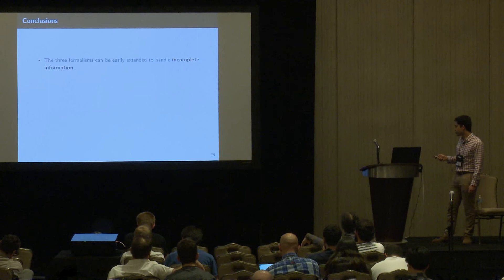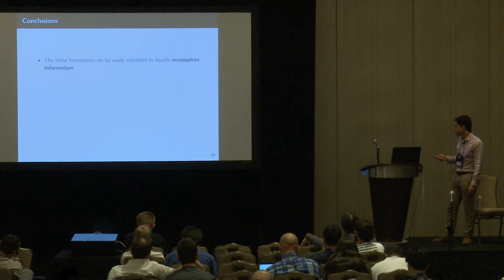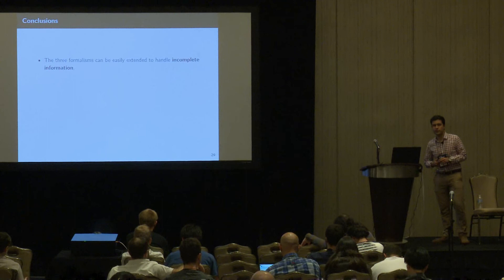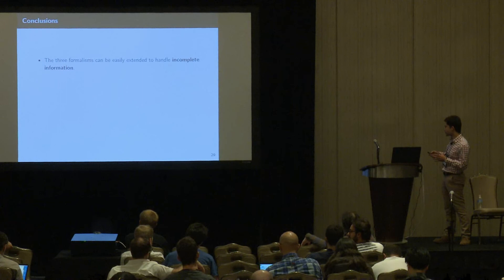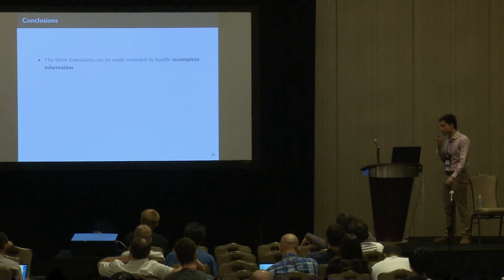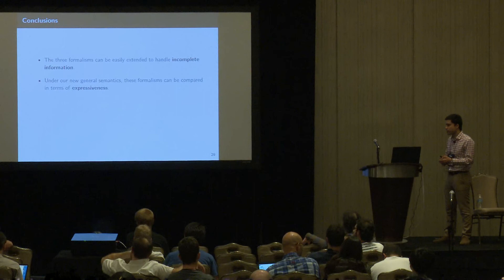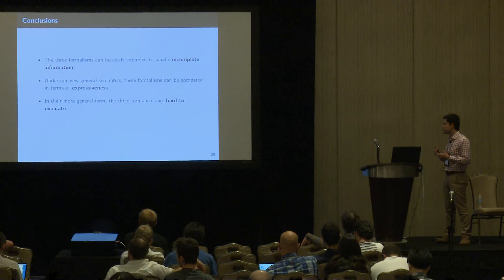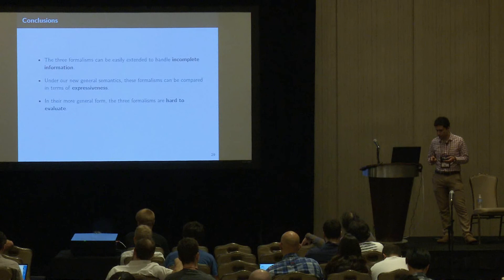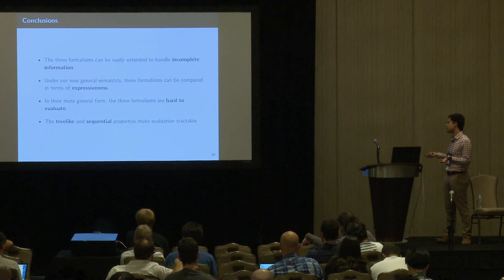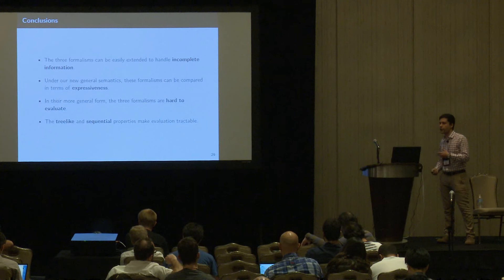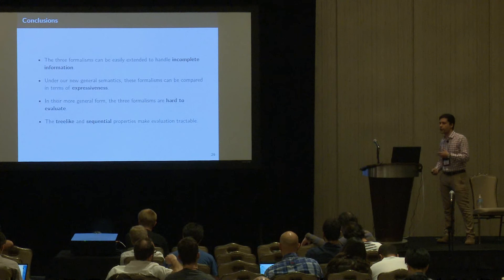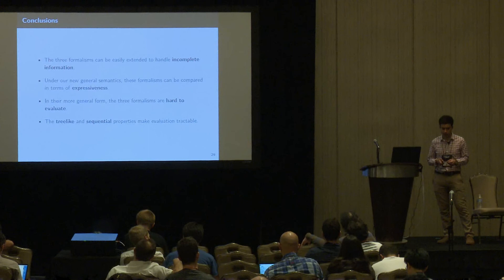In conclusion, we have seen how these three formalisms can be extended to support incomplete information and how they relate. It is straightforward to provide new declarative semantics that introduce incomplete information to these previously studied formalisms. Under our new general semantics, we can compare them in terms of expressiveness and complexity. These problems are hard when unconstrained, but simple constraints — sequentiality and tree-likeness — allow us to express most of what we need and obtain efficient evaluation algorithms.